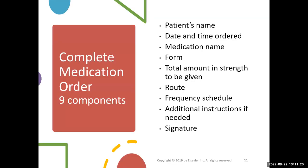A complete medication order has nine components. If you are looking at a handwritten prescription, you will need all nine. If you're looking within a patient's chart, some will already be there, like the patient's name. The date and time ordered will automatically populate when the provider opens a blank order page. But on a written prescription, you have to have a date and time showing when the prescriber wrote the order.